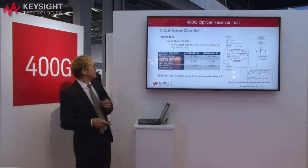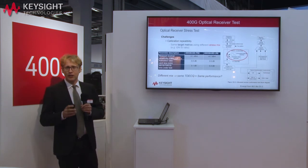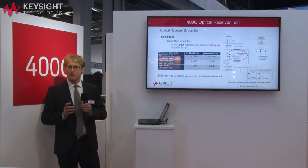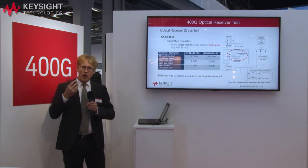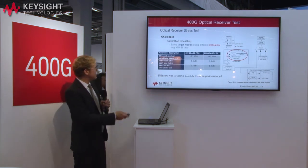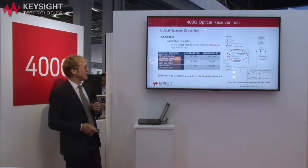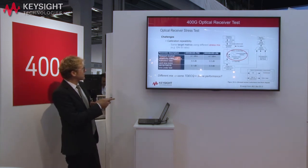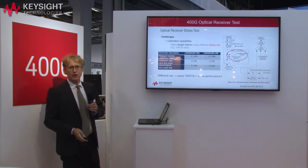Now let's look at the receiver side. To test the performance of your optical receiver, you need to generate an optical stress signal with specific metrics. These metrics are listed here for different flavors of the 200G and 400G standards — the signal must present a specific outer OMA, a specific extinction ratio, and also a specific TDQ.